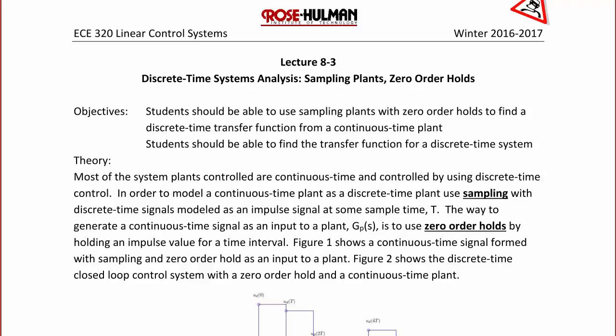Most system plants controlled are continuous time and controlled using discrete time control. In order to model a continuous time plant as a discrete time plant, we use sampling with discrete time signals modeled as an impulse signal at some sample time T. The way to generate a continuous time signal as an input to a plant GP(s) is to use zero-order holds by holding an impulse value for a time interval. Figure 1 below shows a continuous time signal formed with sampling and a zero-order hold as an input to a plant.